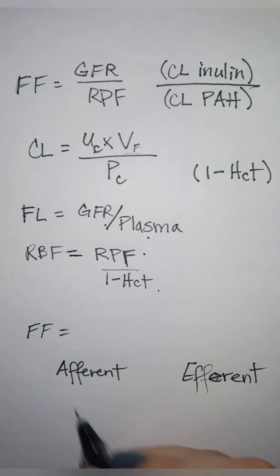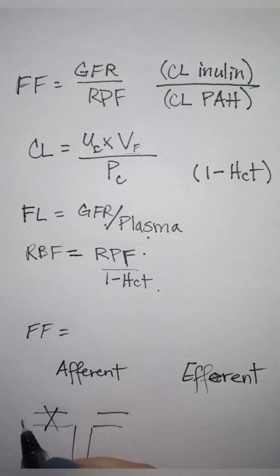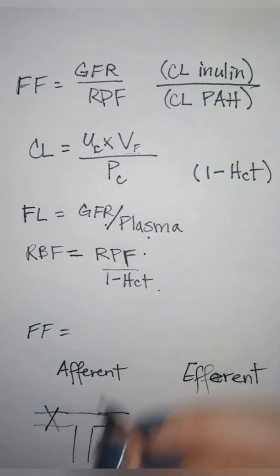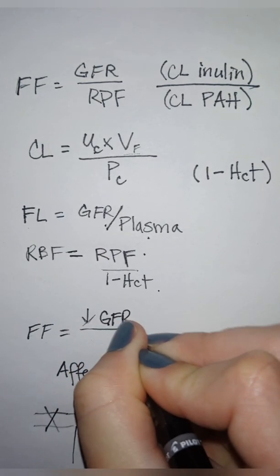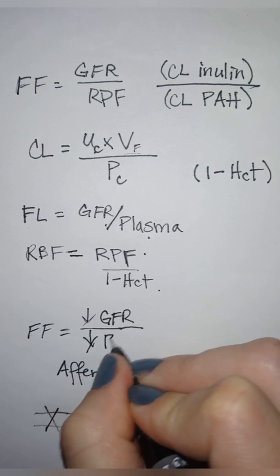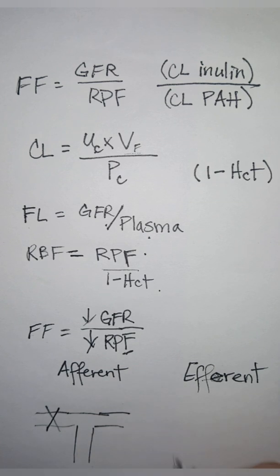Okay, so if I constrict afferent, let's say that this is where we filter. This is GFR. This is afferent over here. This is efferent. If I constrict afferent, what's happening is nothing is flowing in in the first place. So I'm going to have a decrease in GFR and I'm going to have a decrease in renal plasma flow as well. Nothing is flowing in. Nothing is getting filtered out, right?